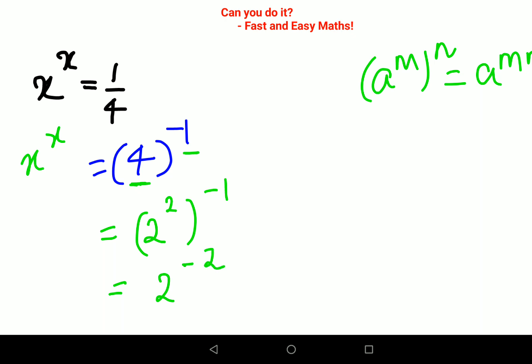Now please understand, if your entire answer would have now become like 2 raised to 2, you would have solved this question - x would have been the value of 2. Now, since here you have x raised to 2 raised to minus 2, you need to make sure that both the numbers have the same power or same sign.